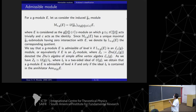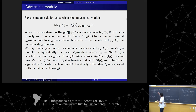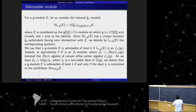In the standard construction of inducing a module from this parabolic algebra, look at the simple quotient of this module: the L(lambda) module. Now we say that a g-module is an admissible module of level k.